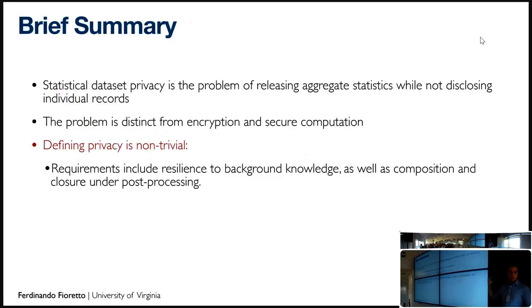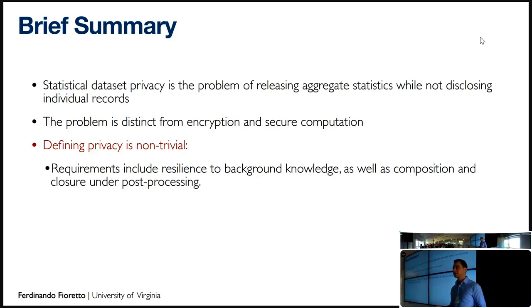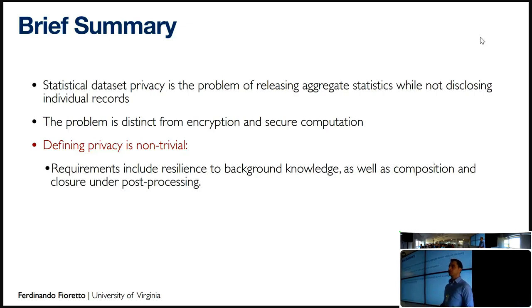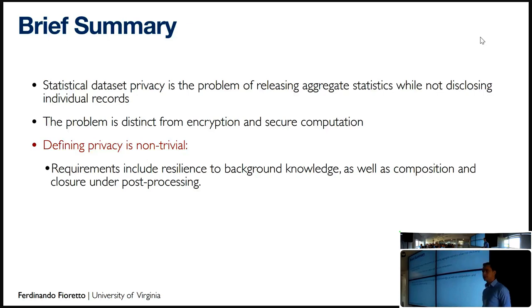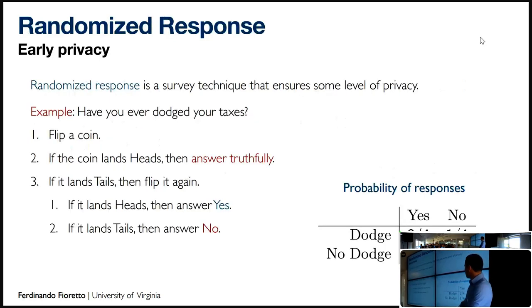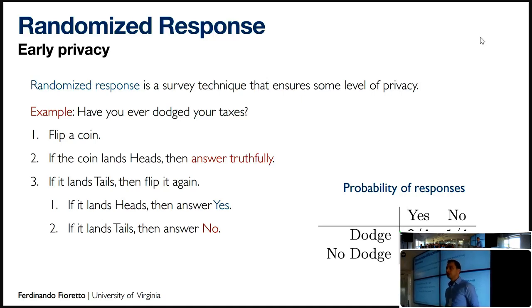So far we have said that statistical data privacy is the problem of releasing aggregated statistics about datasets. The problem is distinct from security — encryption, multi-party computation, and so forth. Defining privacy is really not trivial; there have been several attempts across the decades until we found definitions we like. Let's check how we can guarantee some privacy and design sound privacy-preserving algorithms.